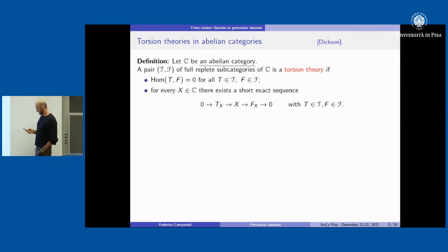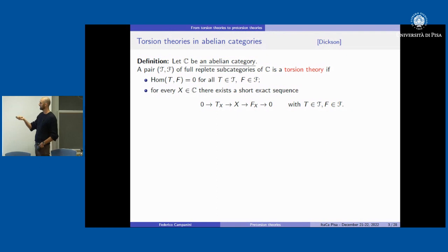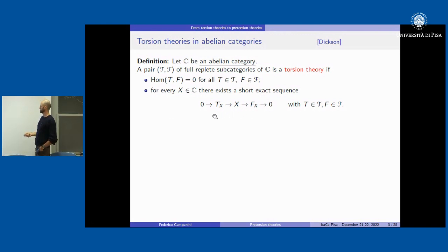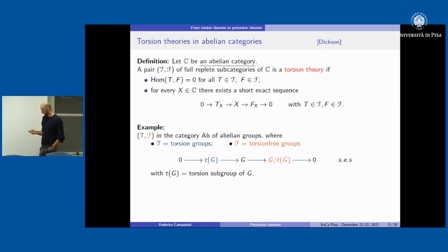If we start from an abelian category, we have a pair of full subcategories T and F which form a torsion theory if there are no morphisms from something in T to something in F, and for every object in C there is a short exact sequence with the first term in T and the last term in F. The terminology comes from the well-known examples in abelian groups, where we have torsion groups as the torsion part and torsion-free groups as the torsion-free part.